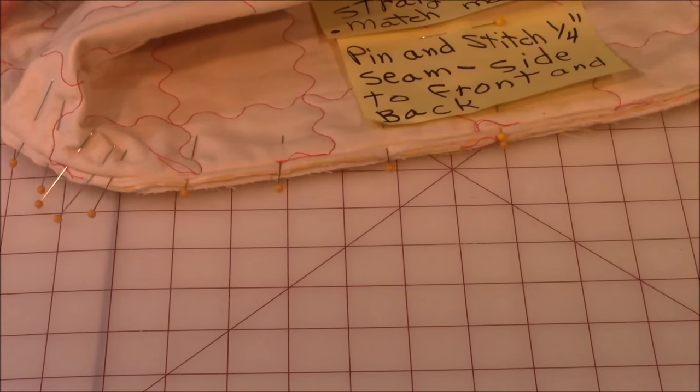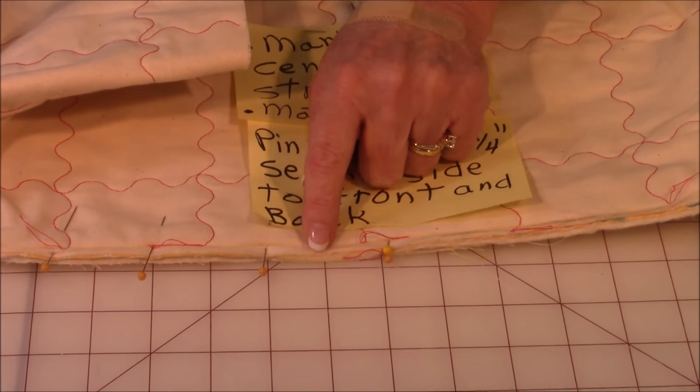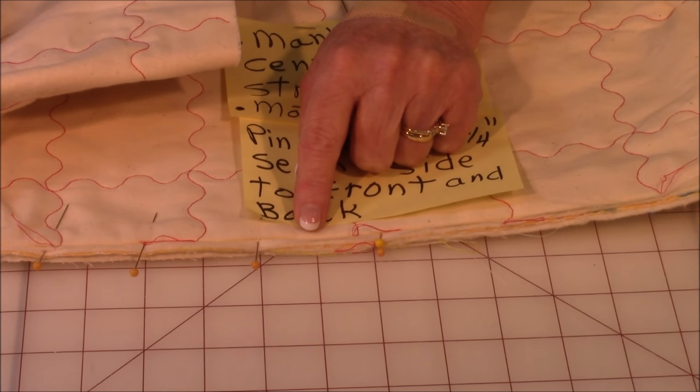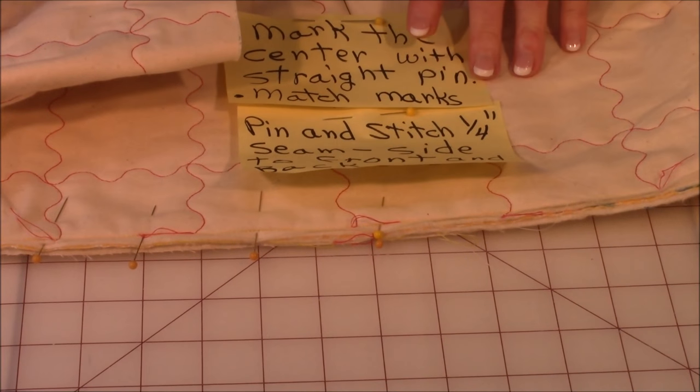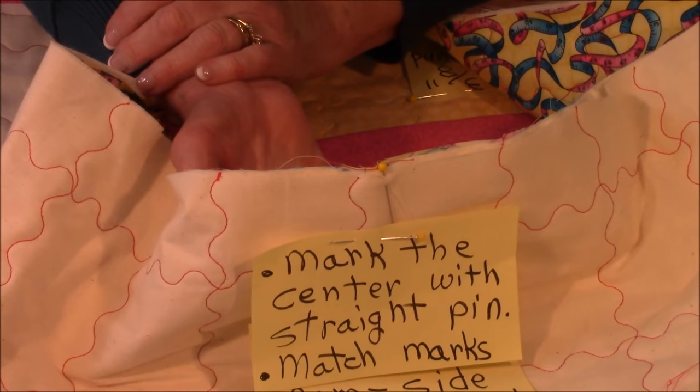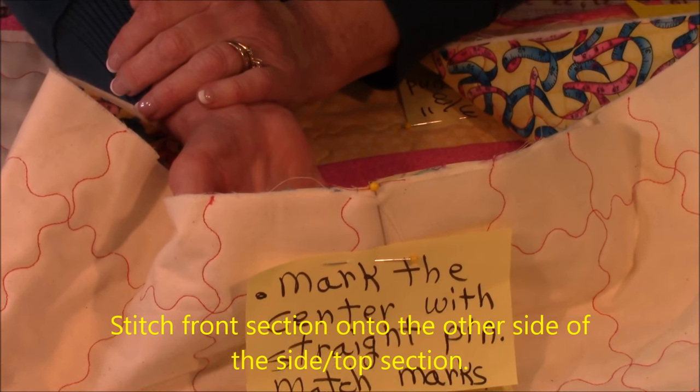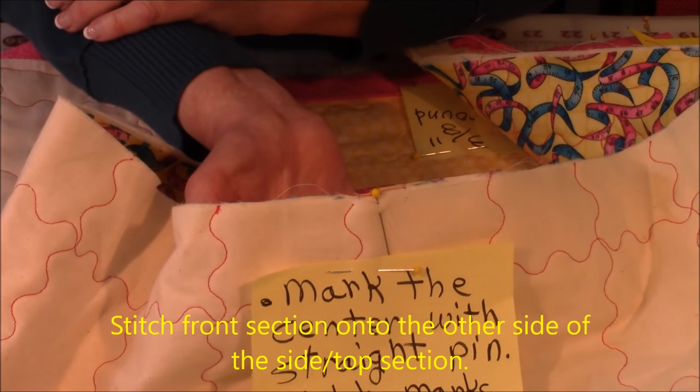Then you're going to stitch one fourth inch seam from this raw edge along all three sides. Then after that take your front piece and stitch it on to the other side of this piece. The side top portion. Doing the same way. Nothing changes. It's done the same way. All right. Now let's go to the bottom.